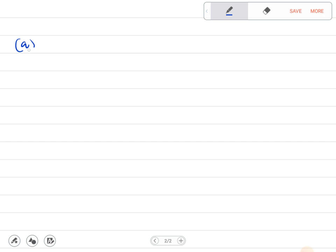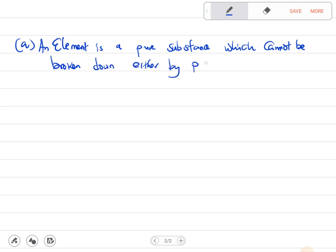A says distinguish between an element and a compound. So an element is a pure substance which cannot be broken down either by physical or chemical means, while a compound...